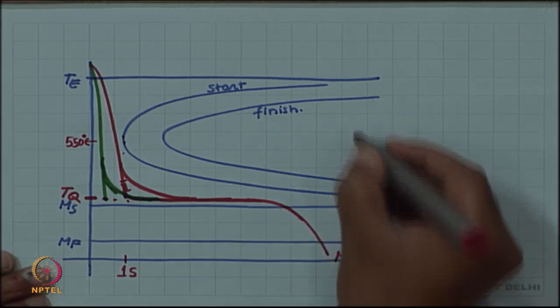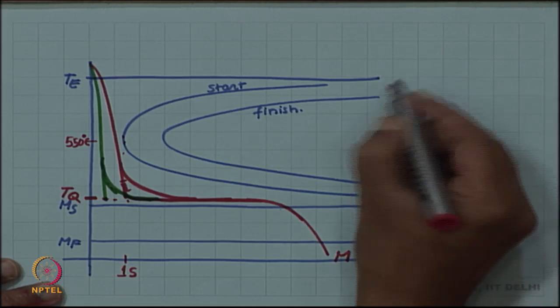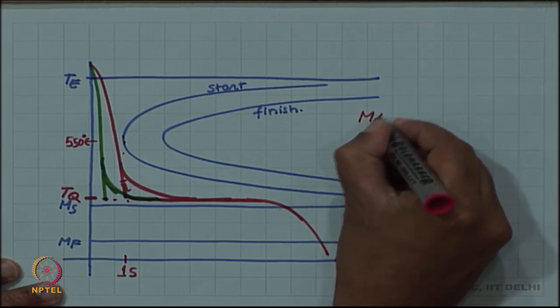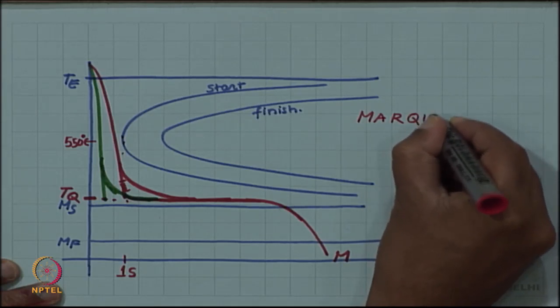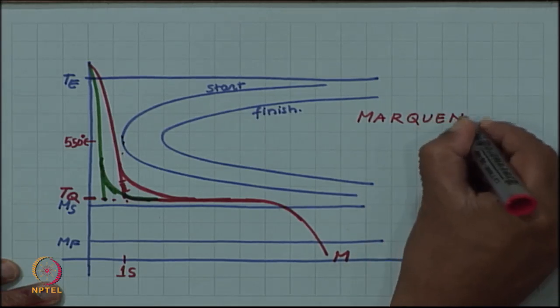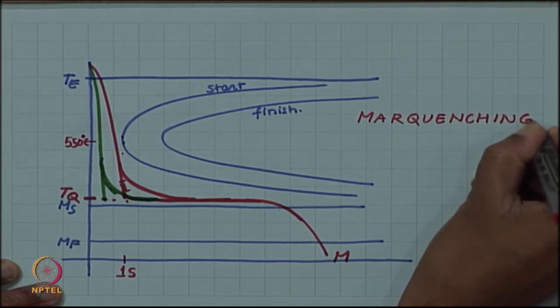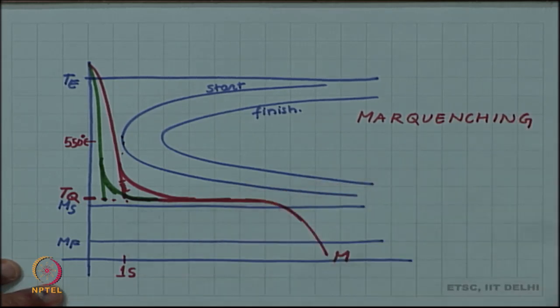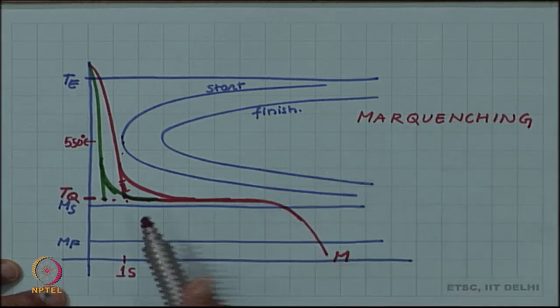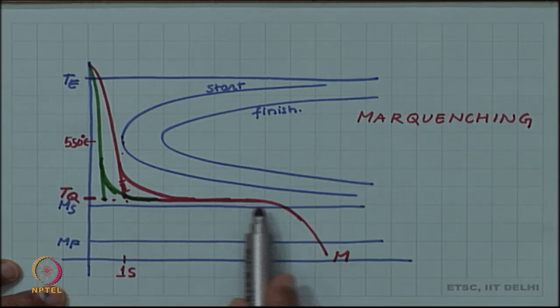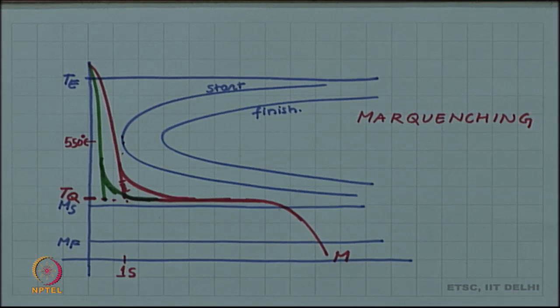This interrupted quench is called mar quenching. Like quenching, mar quenching is also producing martensite, but it is avoiding the problem of generation of residual stresses and avoiding the problem of quench cracks.